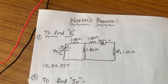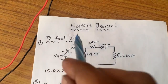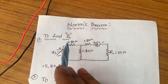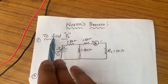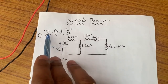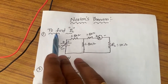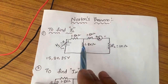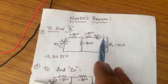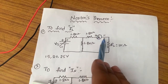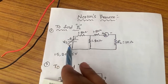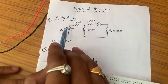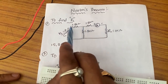Hello everyone. Today we are going to conduct the Norton's theorem experiment. In this experiment, the given circuit has three resistors and a load resistance. First, we need to find out IL, the load current. This ammeter is used to find the current passing through the load resistance, and we will supply voltage using the RPS. Now let's connect the given circuit.